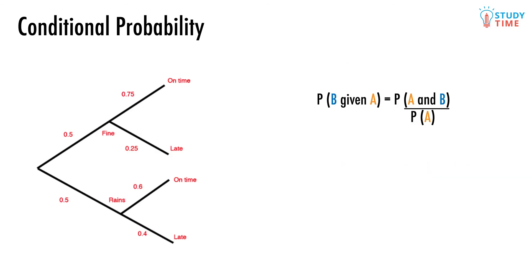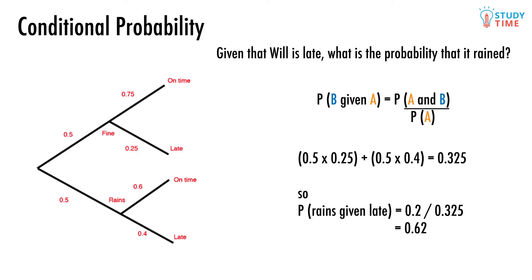This next problem seems just like the last one but it requires a modicum more thought. Given that Will is late, what is the probability that it rained? This question is different to the last one in that now the condition comes from the second part of the tree, not the first. We begin by looking at the chance of both these things happening - it raining and Will being late - which is 0.2.